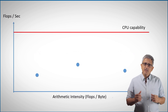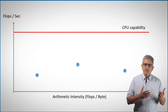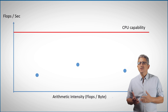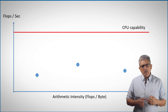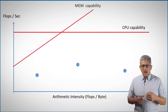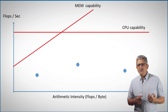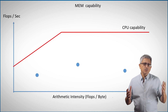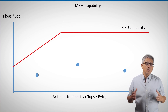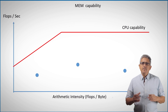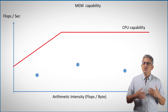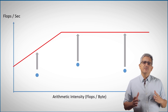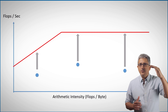Our hardware has its limitations. For example, the red line is the maximum flops per second this CPU can execute. But sometimes the problem is not the compute — memory bandwidth can also limit us, as you can see in the other red line. These two form what we call the roofline, which represents the maximum performance our machine can supply.